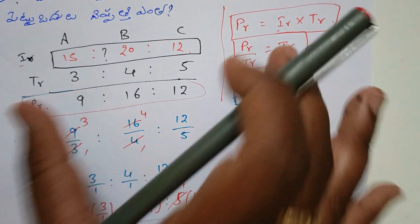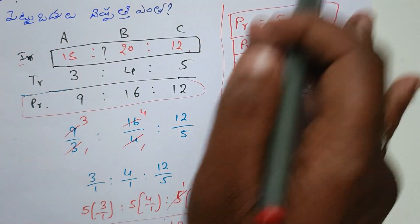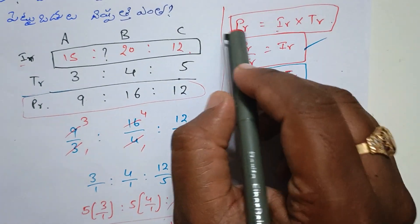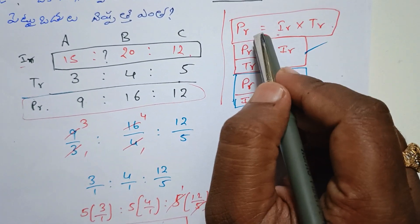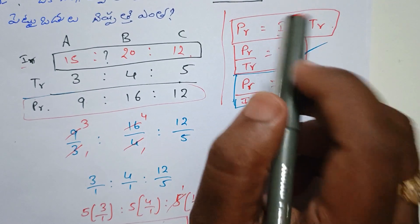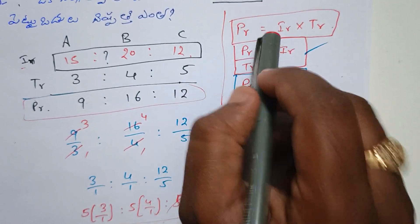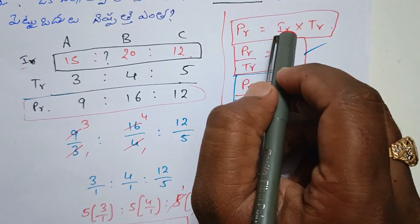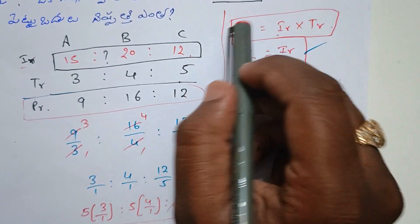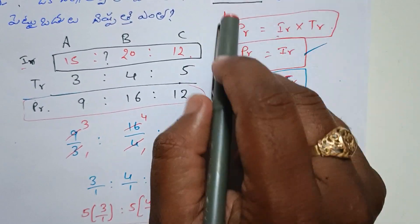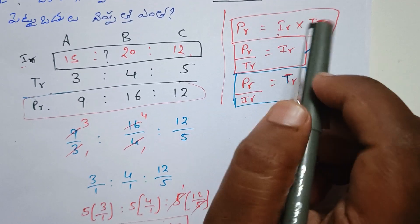This is the first model and the formula we have to use. This formula involves profit ratio, investment ratio, and time ratio. This is the formula: profit ratio equals investment ratio multiplied by time ratio.